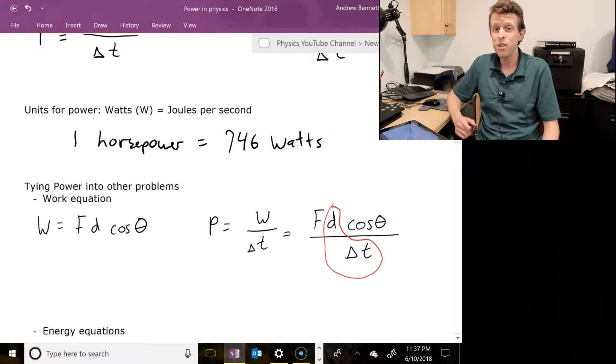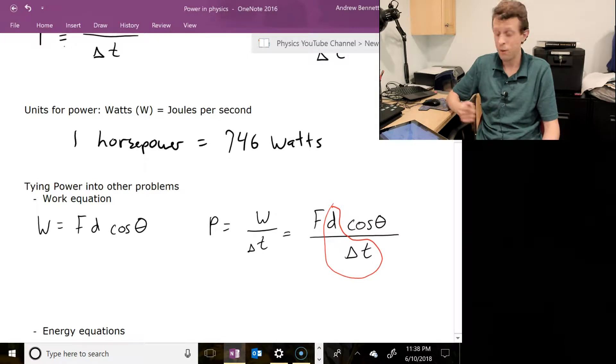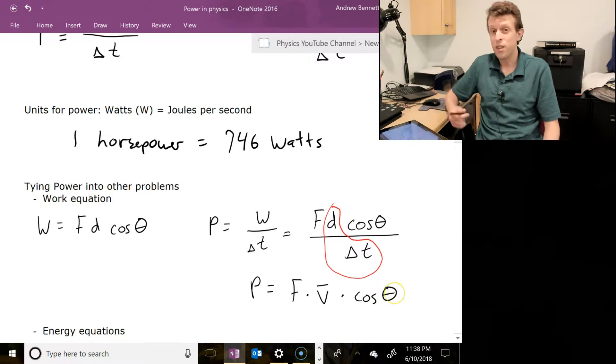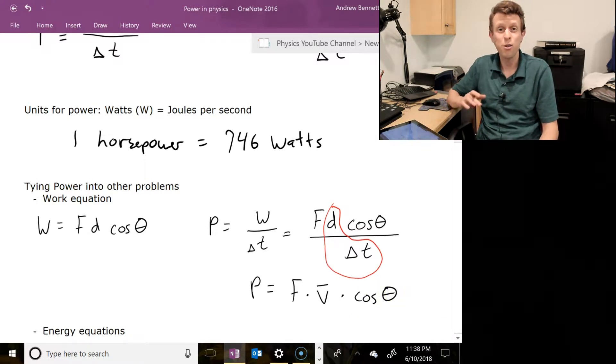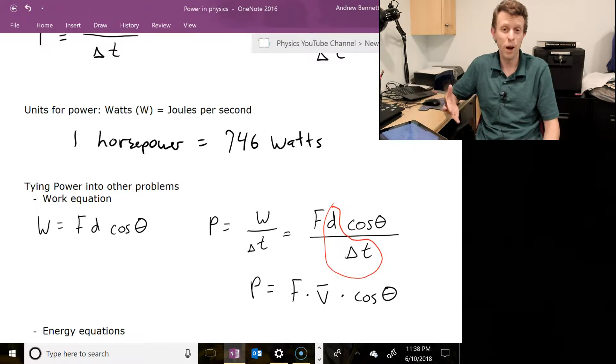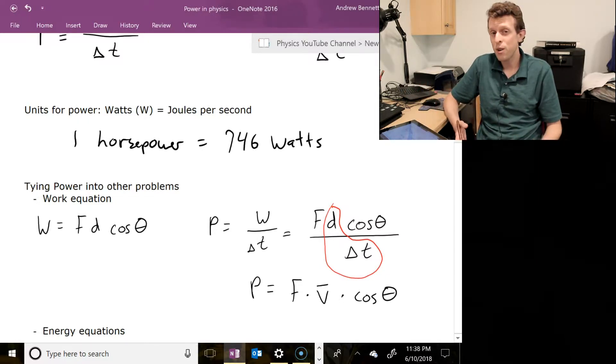But a neat little trick that pops up sometimes here, notice that here we've got D over delta T, and D over delta T, distance or displacement over time, that's the same as average velocity. So if we happen to know the average velocity, or if it's traveling at a constant velocity, then that would be the average velocity. We could also say that power is equal to force times the average velocity times cosine theta. Now that's really handy for problems like a car is traveling at 30 meters per second, and the engine is providing this amount of force as the car is traveling. What's the power output of the engine? Or here's what the power output is, and what would the force be? So constant velocity problems tend to work really nicely with that form of the equation.